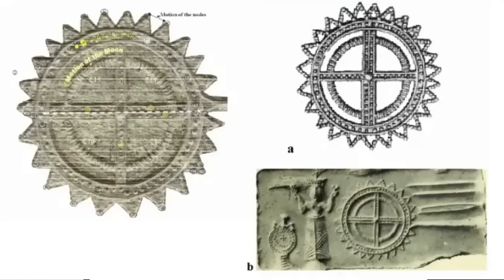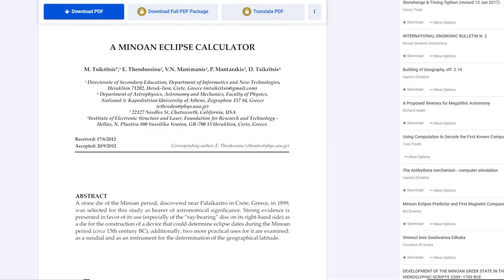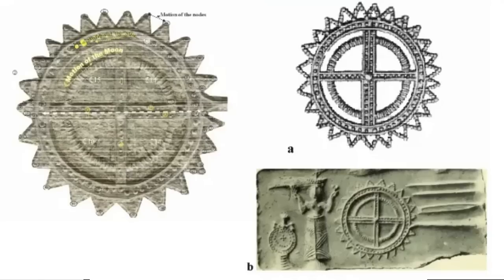Tonight we are going to dissect selected parts of a very interesting paper titled 'A Minoan Eclipse Calculator.' We'll leave you links below so you can read the paper yourself. An observation by the British archaeologist Sir Arthur Evans in his book 'The Palace of Minos at Knossos' back in 1935